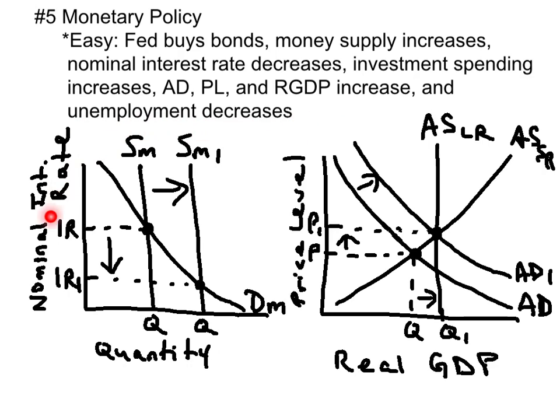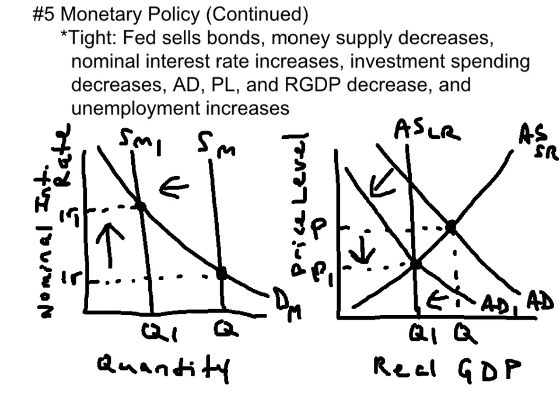The graph on the left shows the money market — a rightward shift of the supply of money, which is set by the Fed, reduces the nominal interest rate. This will increase investment spending, which will shift aggregate demand to the right.